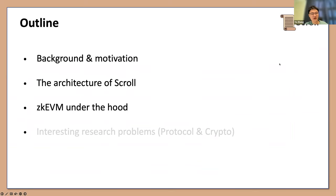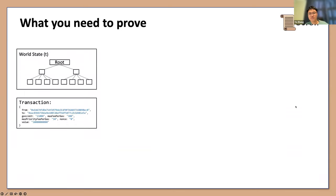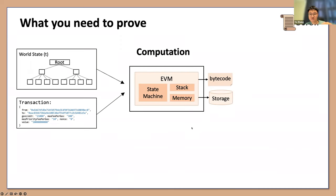Now I'll talk more about the ZK part and the exact circuit optimizations we are using and how we use those optimizations to build the ZK circuits. To build a ZK-EVM and write all those circuits, we first need to understand the exact computation we need to prove. Starting with some initial world state and root, after receiving a transaction, the node runs it over EVM — a stack-based virtual machine — which loads the corresponding smart contract bytecode to memory and executes it opcode by opcode with the transaction as input.